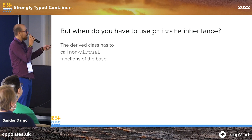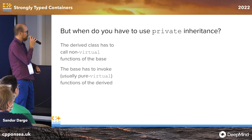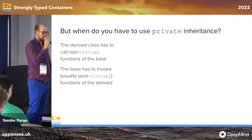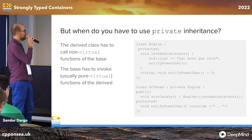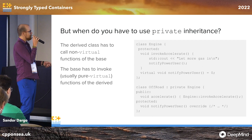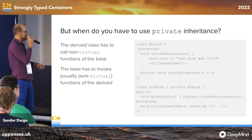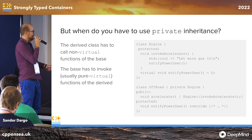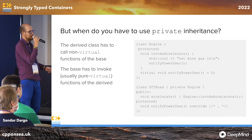When you have to use it, there are two parts: the derived class has to call a non-virtual function of the base, and that base has to invoke a pure virtual function of the derived. In our example, the OffRoadCar has an engine. In 'accelerate' you call 'invoke_accelerate' from the base and it calls 'notify_power_user', which is implemented in a certain way. There is rarely a case when you have to use private inheritance.